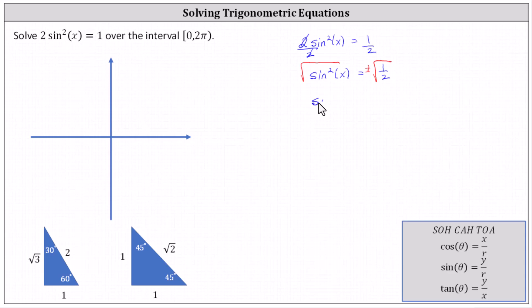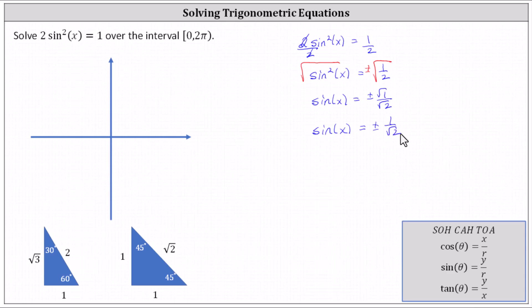Simplifying, we now have sine x equals plus or minus the square root of one half, which is equal to plus or minus the square root of one divided by the square root of two. The square root of one is one, giving us sine x equals plus or minus one divided by the square root of two. We're looking for all angles with a sine value of positive or negative one divided by the square root of two over the interval from zero to two pi, including zero and not including two pi.